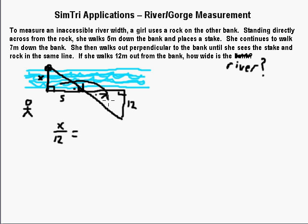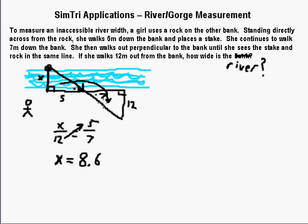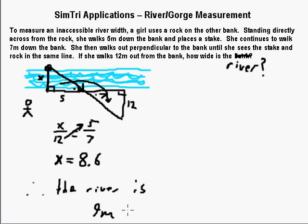Setting up little over big: X over 12 equals 5 over 7, since those are corresponding sides. Cross-multiplying gives X equals 8.57. I paused and went to a calculator — it's actually 8.57, but since you're carrying this out in real life you're not getting two decimal places of accuracy anyway, so even 9 meters would be a good estimation.